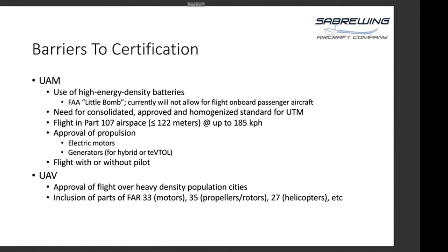Barriers to certification: flying high-density batteries — the FAA calls them little bombs. Also the need for approved and homogenized standards for UTM, flight in airspace of 122 meters or less at up to 185 km/h, and the approval of propulsion — electric motors or generators in the case of a hybrid or TE-VTOL — and flight with or without a pilot. For us specifically, we're using Part 21.17B to tailor Part 23 to include parts of Part 33 for motors, Part 35 for propellers and rotors, and Part 27 for helicopters.